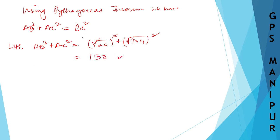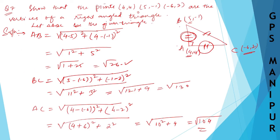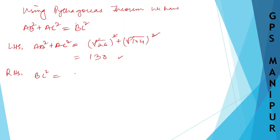Right hand side, that is BC square is equal to, what is BC? BC is root over 130, so root over 130 whole square. Square and root cancel, so it will be 130.